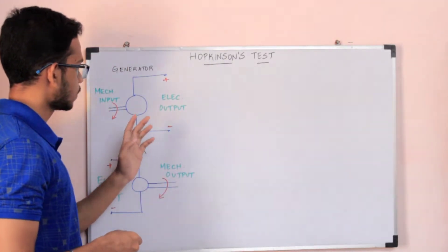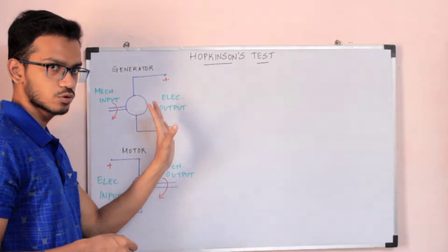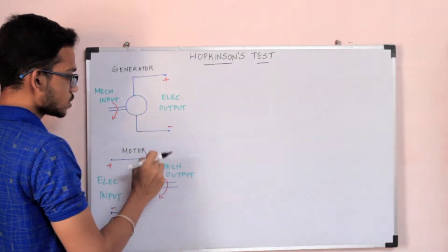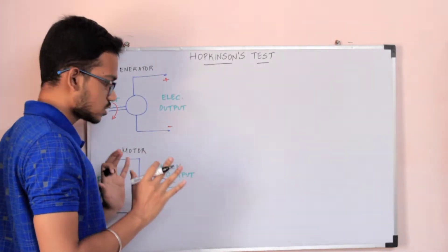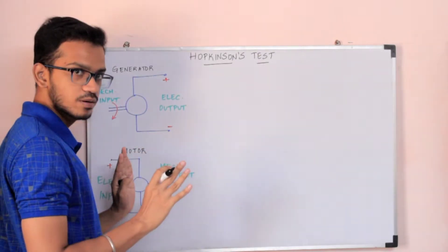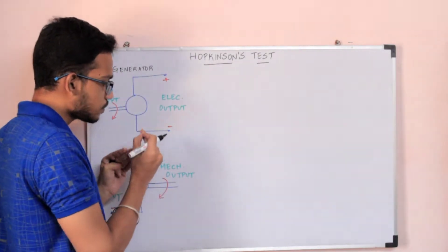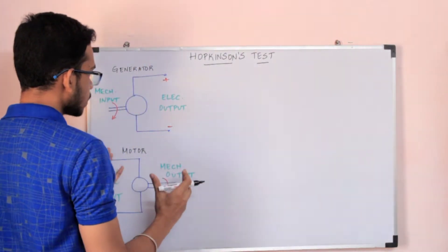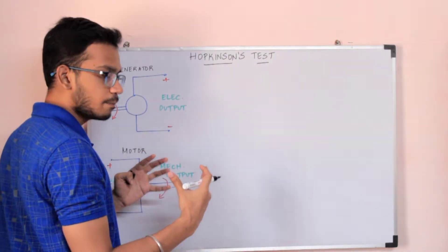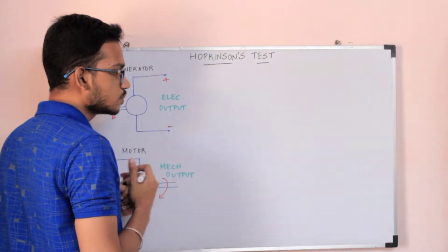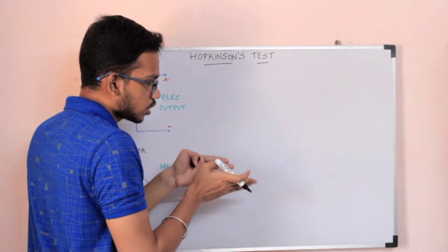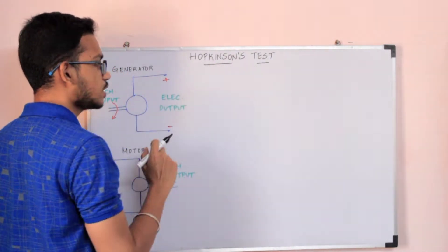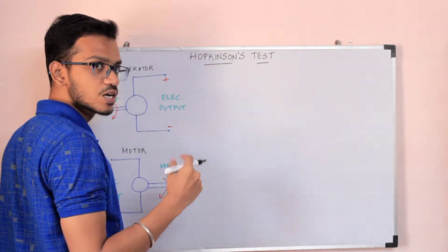Now, there are two machines. One machine will act as a generator, and the other machine will act as a motor. I will connect the motor and generator back-to-back. That is why it is also called a back-to-back test or regenerative test.